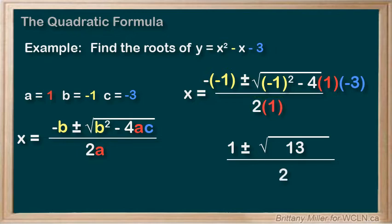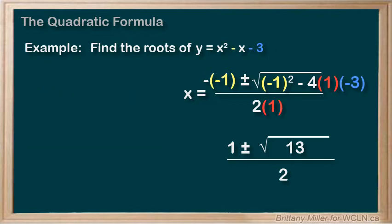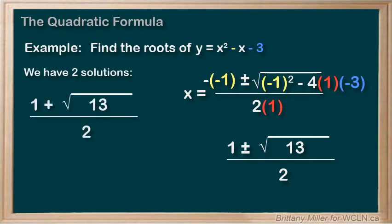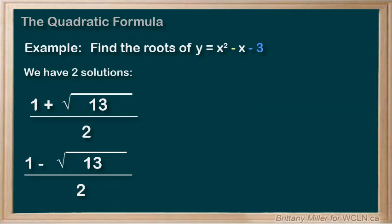For this example, this is as simple as it really gets. The plus minus means that we have two solutions. One plus square root of 13 over 2 and one minus square root of 13 over 2. You could plug those into a calculator to get decimal values. Negative 1.303 and 2.303.